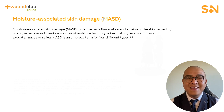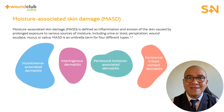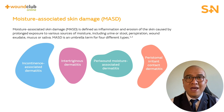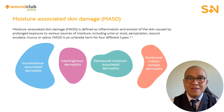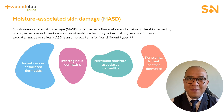It is generally accepted that MASD consists of four distinct conditions, each having slightly different etiologies: Incontinence-Associated Skin Dermatitis, Intertriginous Dermatitis, Peri-Wound Moisture-Associated Dermatitis, and Peristomal Irritant Contact Dermatitis. It is important that you distinguish between the four conditions to ensure appropriate prevention and management.